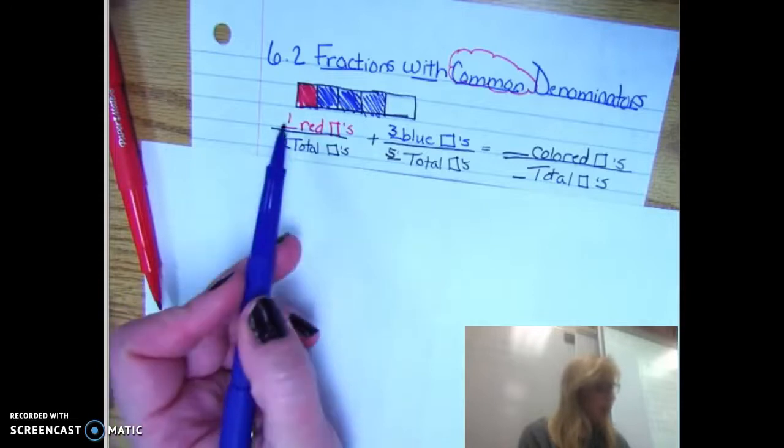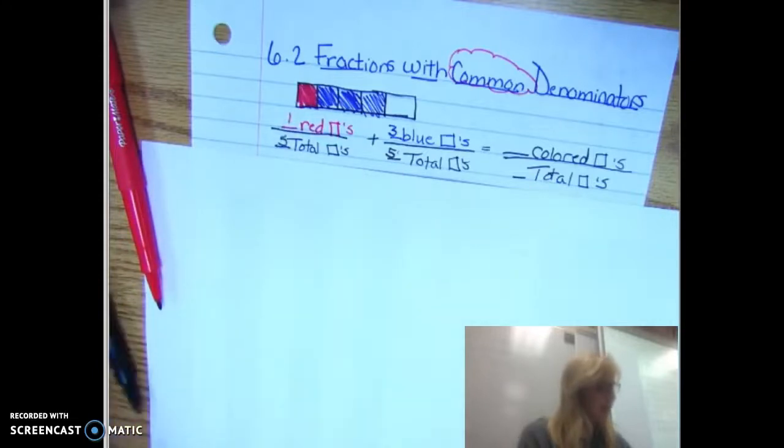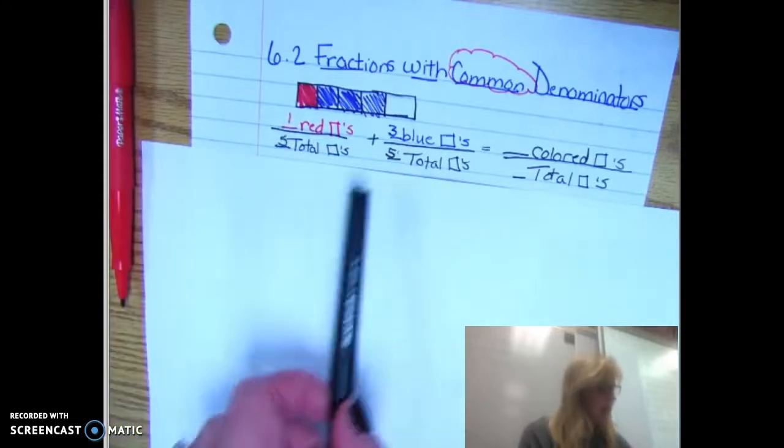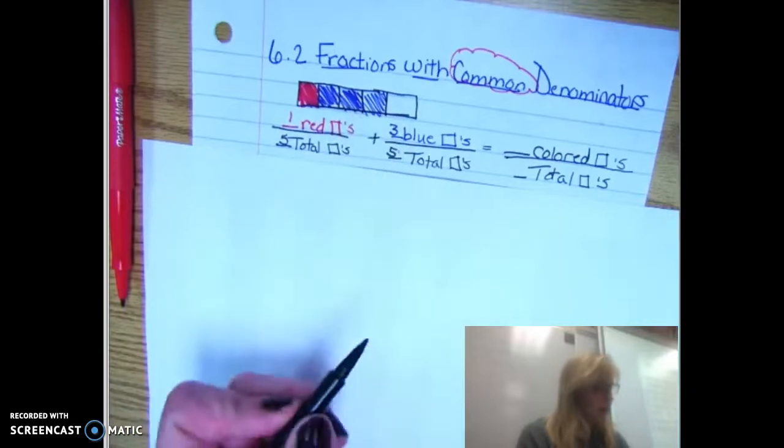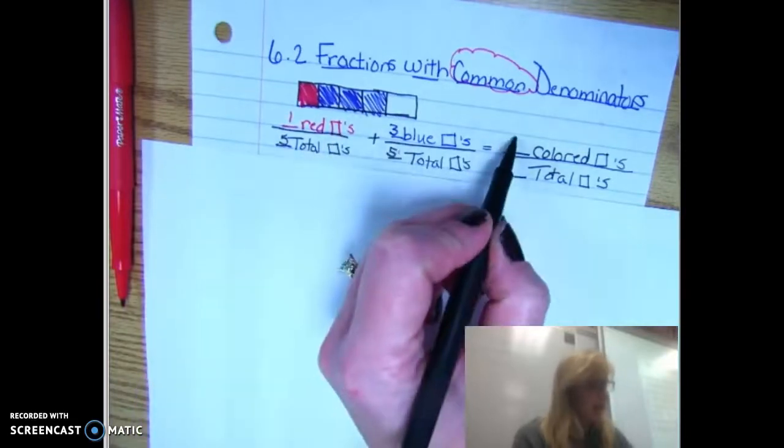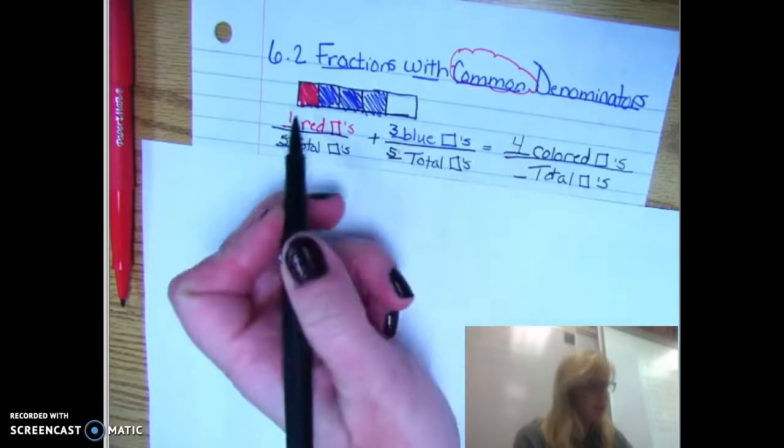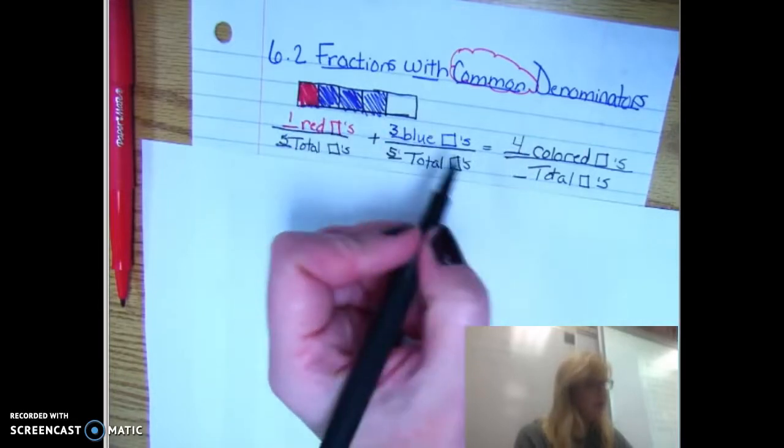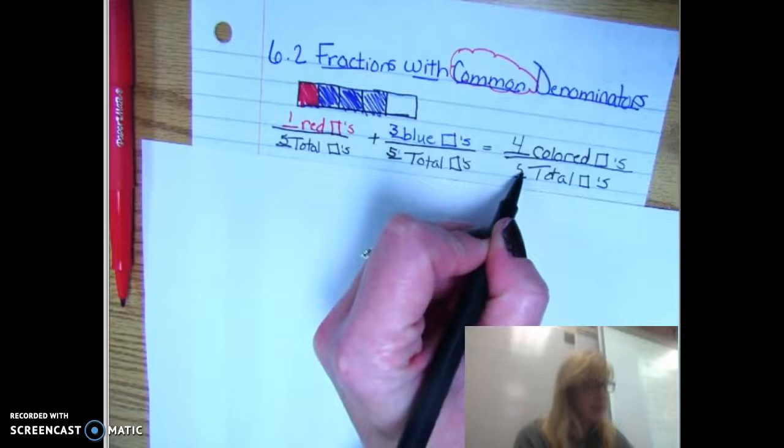Well, if I ate one red on one day, three of the blue on another day, then I have a total of four colored squares, either red or blue, out of the, still the total is only five.